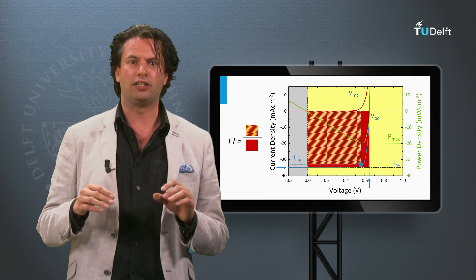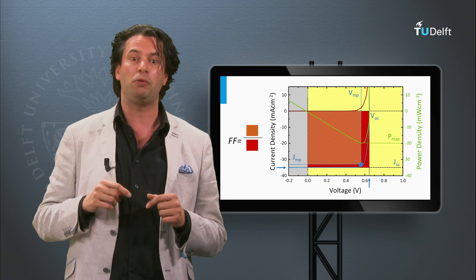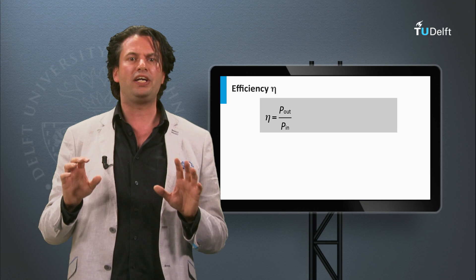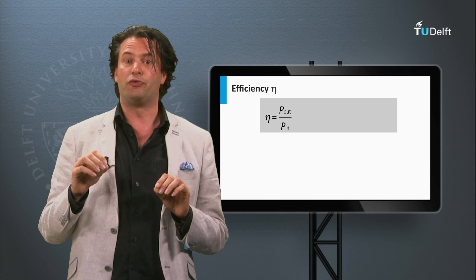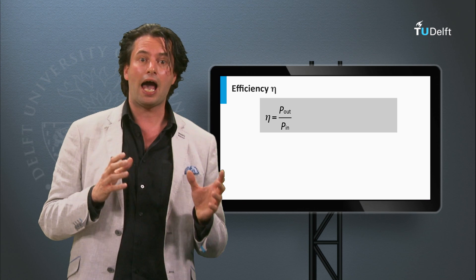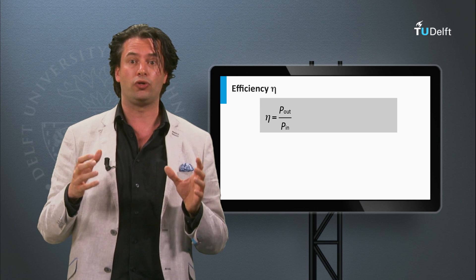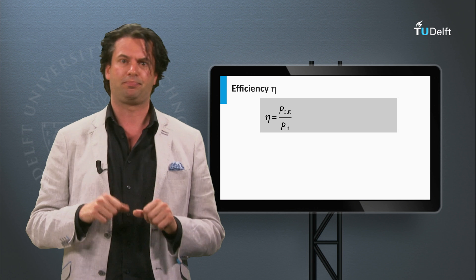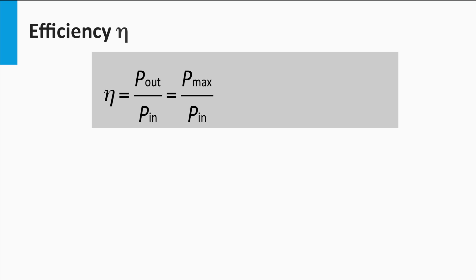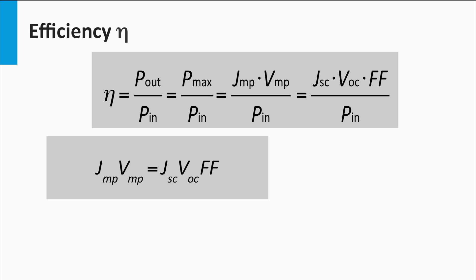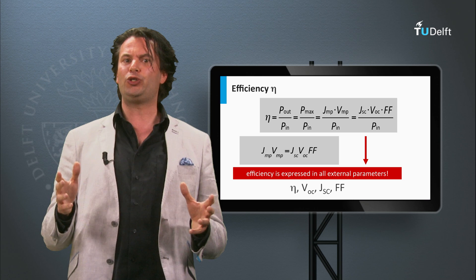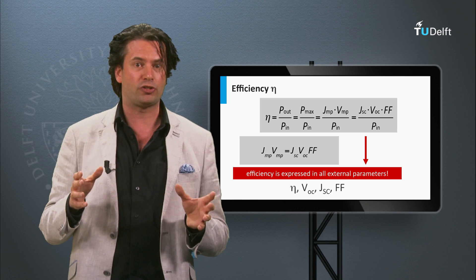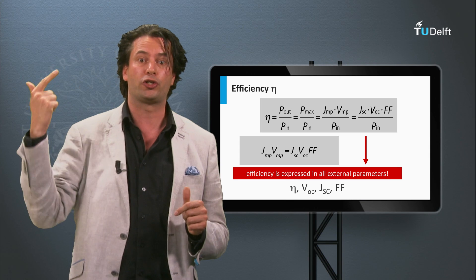This expression will show that the larger the open circuit voltage, the closer the fill factor will be to the value of one. Now we introduce the conversion efficiency eta of a solar cell. This is the ratio between the power density coming out of the solar cell, P out, and the light power density incident on the solar cell, P in. The conversion efficiency is defined at the maximum power point, so P out equals P max. P max equals the product of Jmp and Vmp, which equals the product of the short circuit current density, the open circuit voltage, and the fill factor. As a result, the conversion efficiency can be expressed in the external parameters: the open circuit voltage, the short circuit current density, and the fill factor.